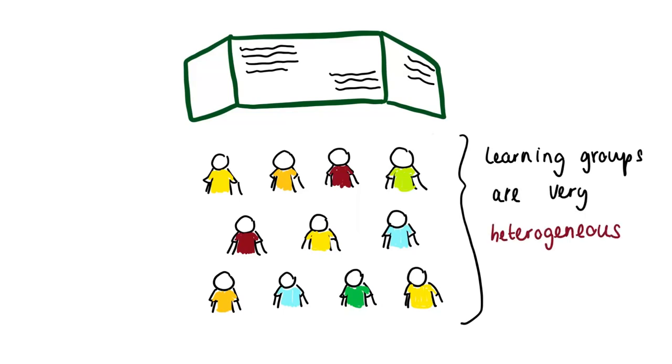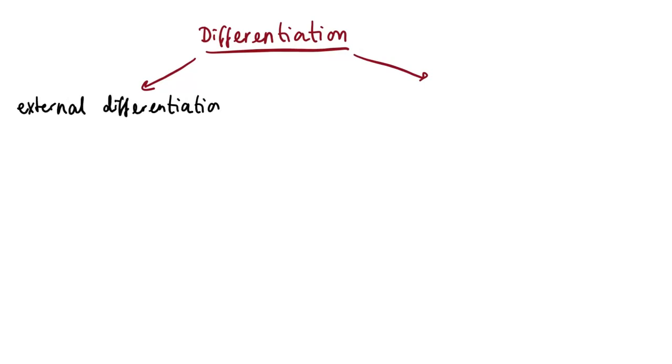To do justice to the heterogeneity of learning groups, there are various methods that promote differentiated learning. A basic distinction can be made between two forms of differentiation. The external differentiation refers to the permanent division of learning groups according to certain criteria, which achieves the greatest possible homogeneity within these groups.